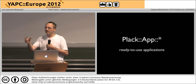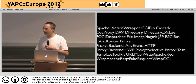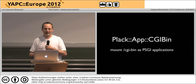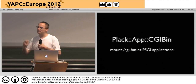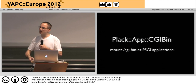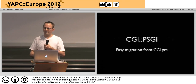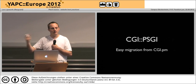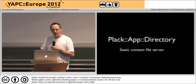We also have a lot of stuff in the Plack::App namespace — these are ready-to-use little applications that do all sorts of things. Plack::App::CGIBin will mount a CGI directory as if they were PSGI applications, so if you want to start using all these middleware goodies on your existing CGI applications you can do so. There's also CGI::PSGI which allows you to migrate your existing CGI.pm applications over to Plack and PSGI without a huge amount of extra work.